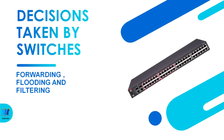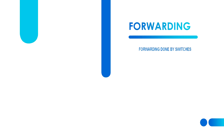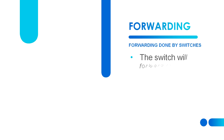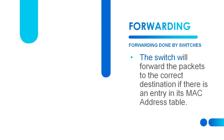Hello everyone, today we are going to discuss the decisions taken by switches, which are forwarding, flooding, and filtering. First, let's discuss forwarding done by switches. The switch will forward packets correctly to the destination if there is an entry in its MAC address table.